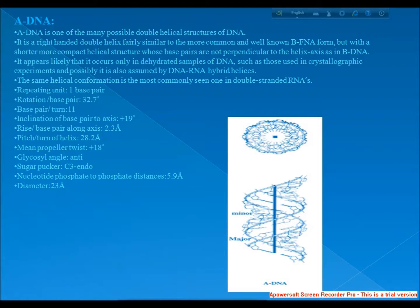First, I discuss A-DNA. A-DNA is one of the many possible double helical structures of DNA. It is a right-handed double helix fairly similar to the more common B-DNA form, but with a shorter, more compact helical structure whose base pairs are not perpendicular to the helix axis as in B-DNA. It appears likely that it occurs only in dehydrated samples of DNA, such as those used in crystallographic experiments, and possibly it is also assumed by DNA-RNA hybrid helixes.